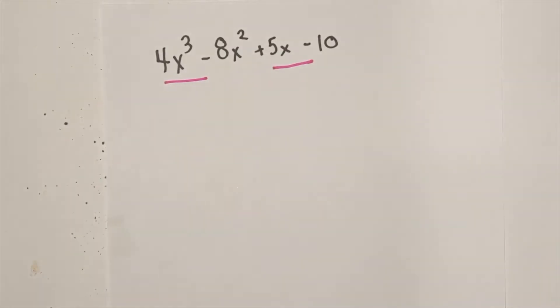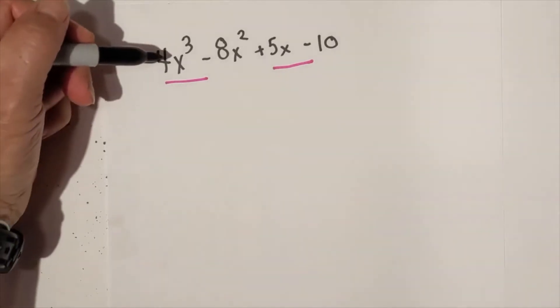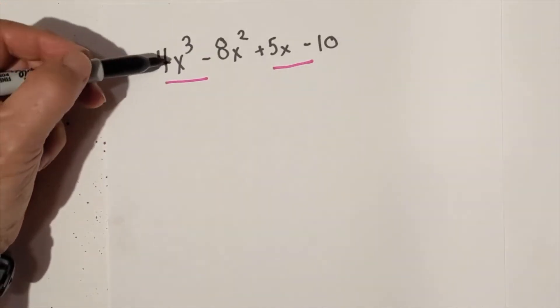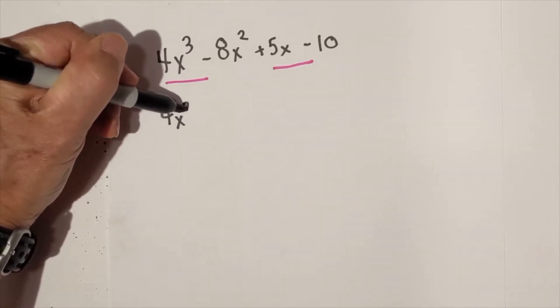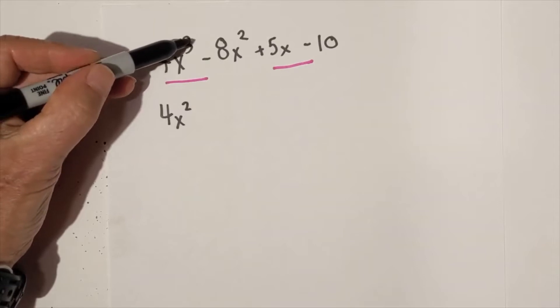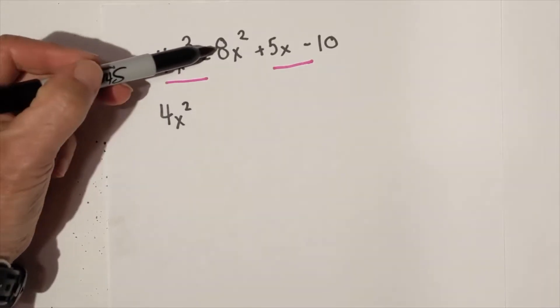Next we are going to find the greatest common factor and remove it. In this grouping it is 4x squared, because we have 4x cubed and 8x squared, and 4 goes into 8, and x squared goes into x cubed and x squared.